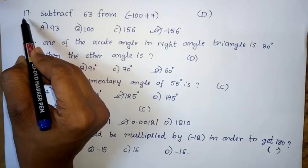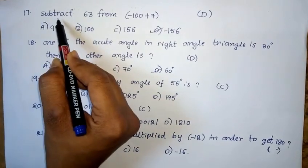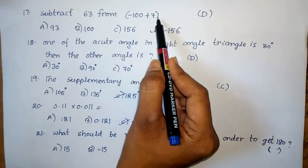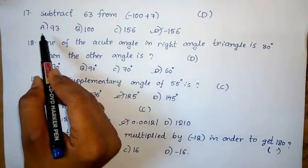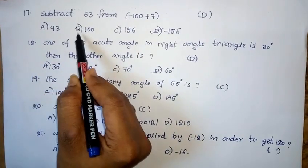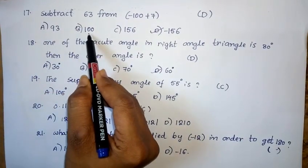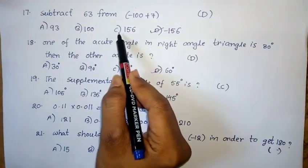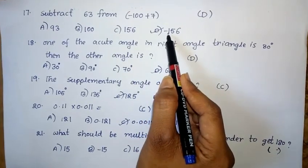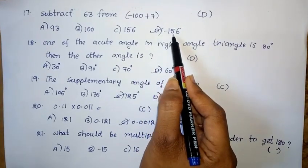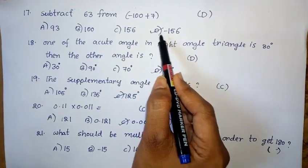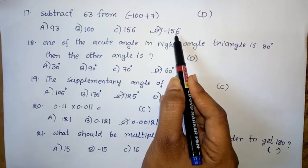Seventeenth question: Subtract 63 from minus 100 plus 7. Option A: 93. Option B: 100. Option C: 156. Option D: minus 156. The right answer is option D — minus 156.